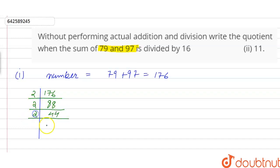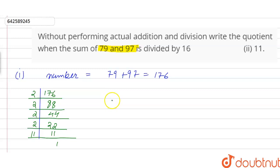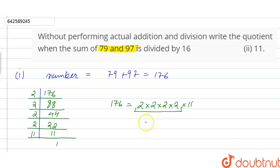Again dividing by 2 we have 22. Again dividing by 2 we have 11, and 11 is a prime number so 11 should be divided by 11. We can write 176 as 2 × 2 × 2 × 2 × 11. So 2 × 2 × 2 × 2 can be written as 16 × 11.